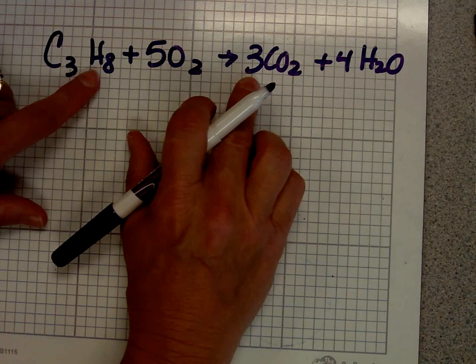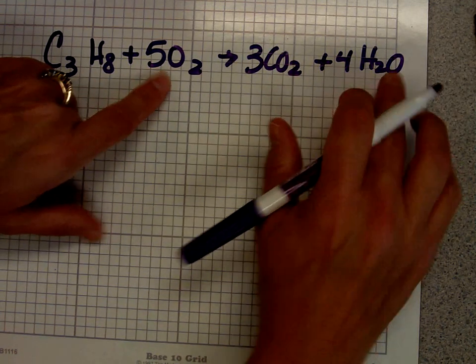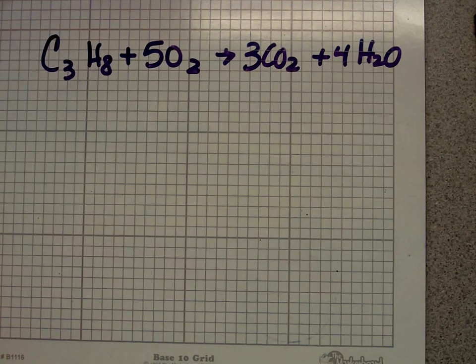I have three carbons, three carbons, eight hydrogens, eight hydrogens, ten oxygens, six and four is ten oxygens. So my equation is balanced and I'm good to go.